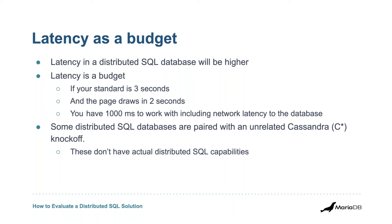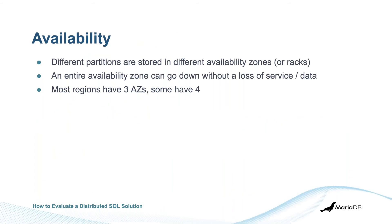Some SQL databases are paired with an unrelated Cassandra knockoff — now being abbreviated 'C-star.' These don't actually have distributed SQL capabilities. Some distributed SQL databases claim sub-millisecond latency, but usually if you dig under the covers, they're not actually doing distributed SQL at that point — they've given you their own version of Cassandra that's not compatible with the actual distributed SQL part. Availability: different partitions are stored in different availability zones, and an entire availability zone can go down without loss of service. Most regions have three availability zones, some have four.